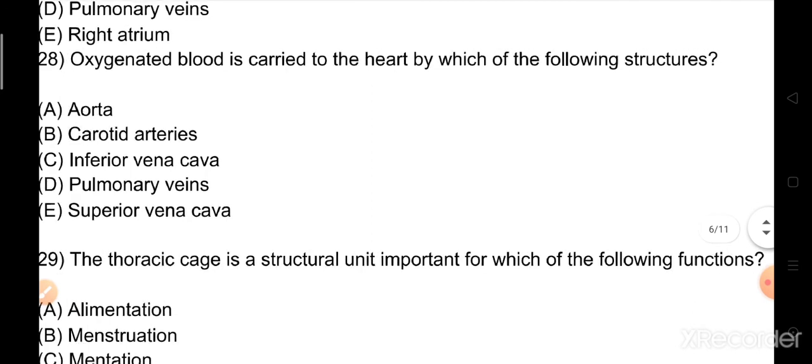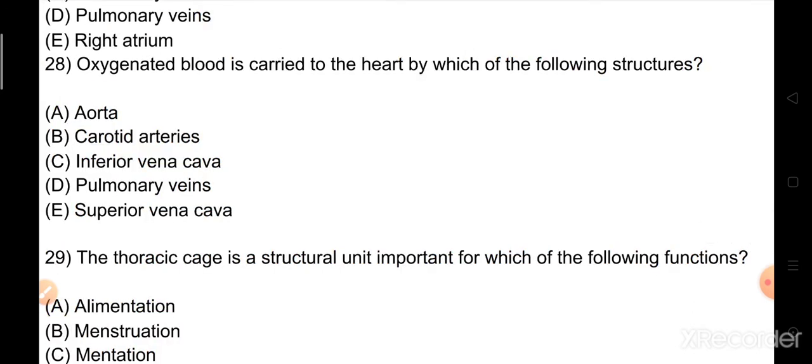Question number 28: Oxygenated blood is carried to the heart by which of the following structures? Options: A) aorta, B) carotid arteries, C) inferior vena cava, D) pulmonary veins, E) superior vena cava. The right answer is option D, pulmonary veins.